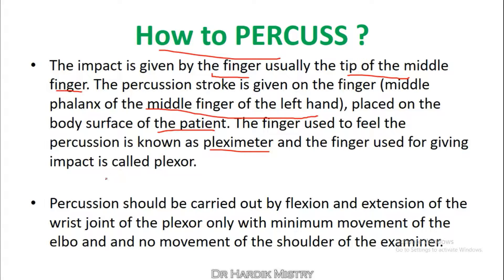The finger used for giving the impact is called the plexor. Percussion should be carried out by flexion and extension of the wrist joint of the plexor only, with minimum movement of the elbow and no movement of the shoulder of the examiner.